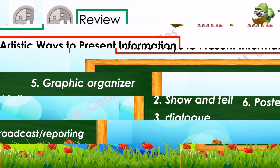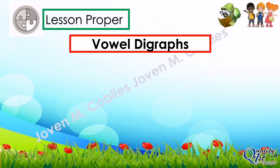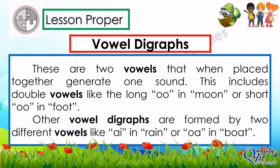We have vowel digraphs. When we say vowel digraphs, these are two vowels that when placed together generate one sound. This includes double vowels like the long OO in 'moon' or short OO in 'foot'. Other vowel digraphs are formed by two different vowels, like AI in 'rain' or OA in 'boat'.